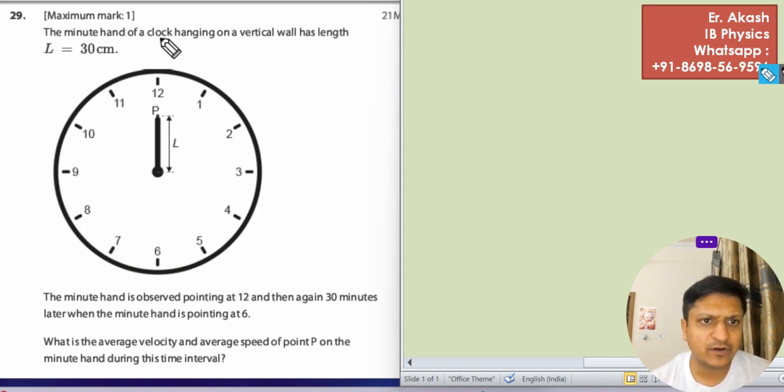The minute hand of a clock hanging on a vertical wall has a length of 30 centimeters. The minute hand is observed pointing at 12 and then again 30 minutes later when the minute hand is pointing at 6.